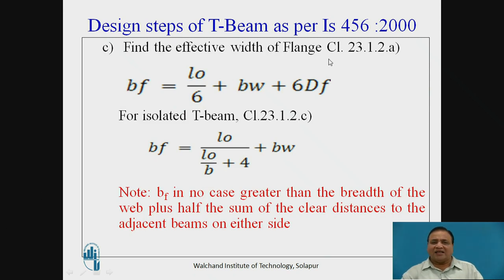Find the effective width of the flange, this is as per clause 23.1.2a. So BF is equal to L0 by 6 plus BW plus 6DF. For isolated beam BF will be is equal to L0 divided by L0 by B plus 4 plus BW. So BF shall not be greater than the breadth of the web plus half the sum of the clear distances to the adjacent beams on either side.